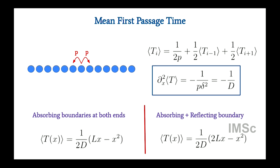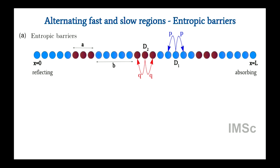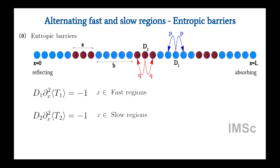Now I want to do this with obstacles on the lattice. I construct obstacles as follows: blue regions are bare DNA with no obstacles, red regions are obstacle regions. When my random walker enters these red regions, it diffuses with a slower diffusion coefficient d2, where d2 is less than d1 in the blue regions. I call these entropic barriers because the slowing comes from exploring the slow regions for much longer times. You can write the mean first passage time equations in both regions.